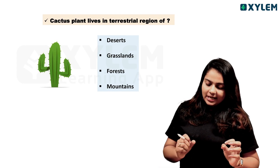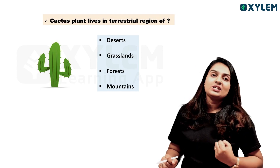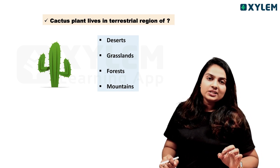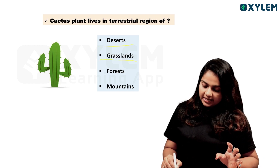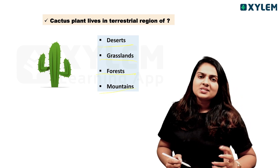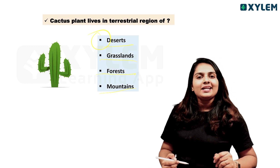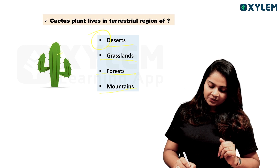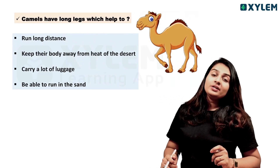Next question: Cactus plants live in which terrestrial region? Options are desert, grassland, forest, and mountains. Cactus plants use their leaves reduced to spines and store water inside, so they live in the desert.